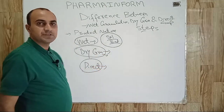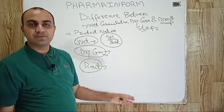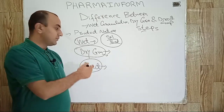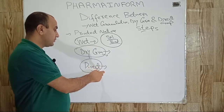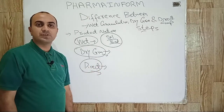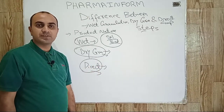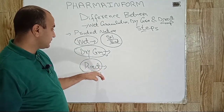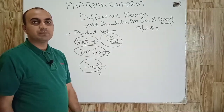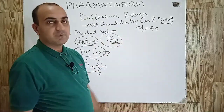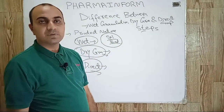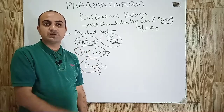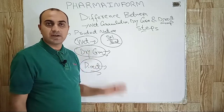In direct compression, as discussed, we simply use a mixing process. By using specialized excipients with good compaction properties, we can compress our products directly using the direct compression method.